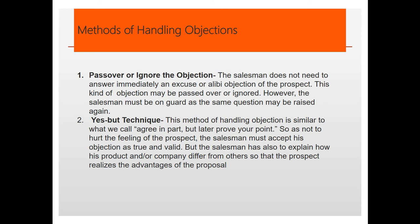Next is the Yes-But technique — agree in part but later prove your point, so as not to hurt the feeling of your prospect. The salesman also has to explain how the product differs from others so the prospect realizes the advantage of the proposal. For example, if the client says their current product is really good, you can say: 'Yes, it's good, but if you try our product, it will give you additional benefits such as...'